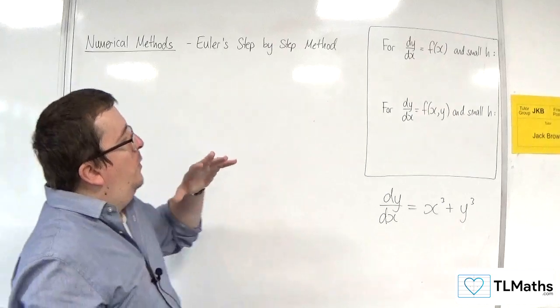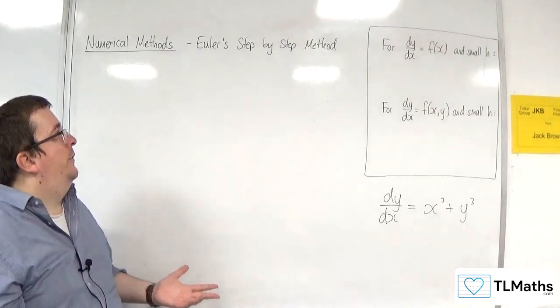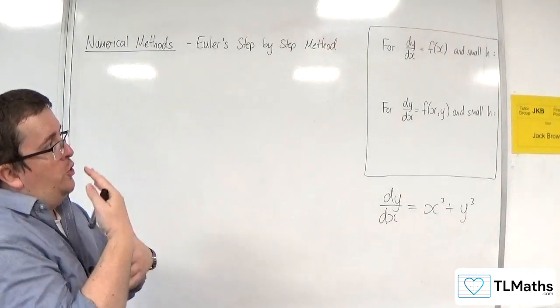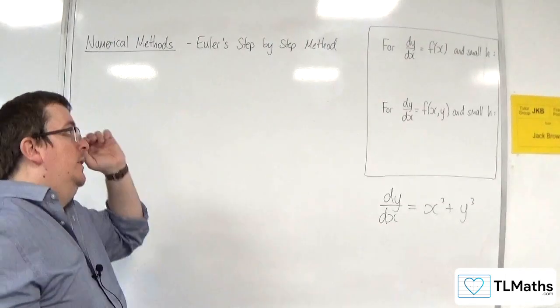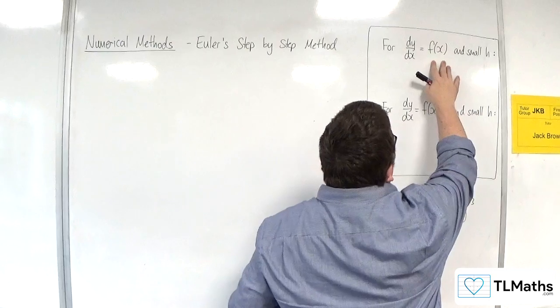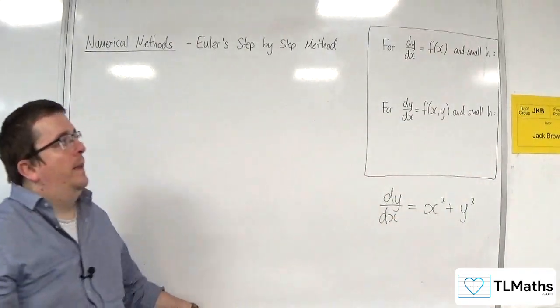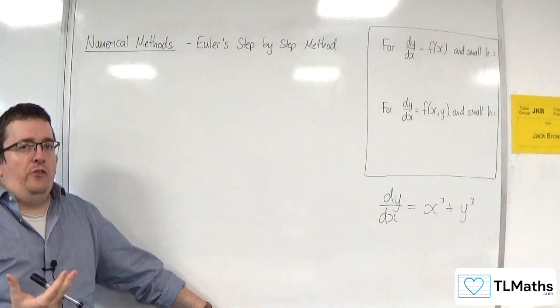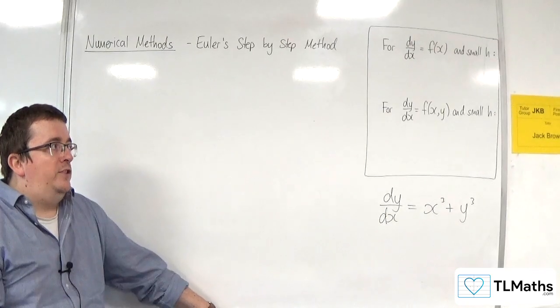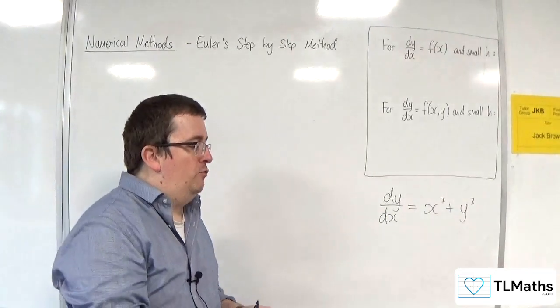So how do we go about this? Well, one way is to use Euler's step-by-step method. Now, depending on the differential equation that you get, whether it's dy by dx equals some function of x, or dy by dx equals some function of x and y, the formula is pretty much the same. Okay, so essentially, I'm just going to be doing this derivation once. And you'll be able to see where that's really coming from.